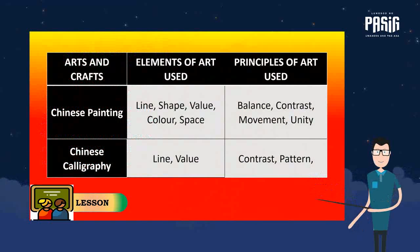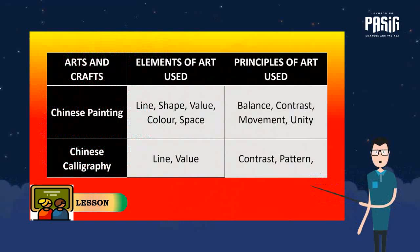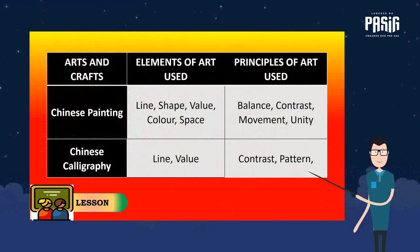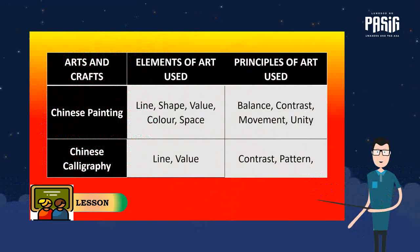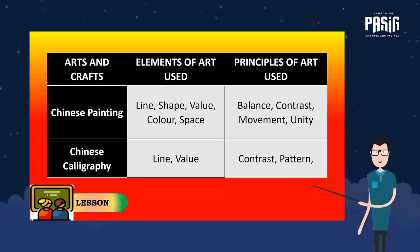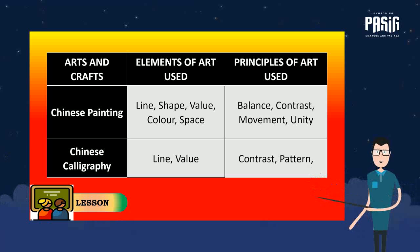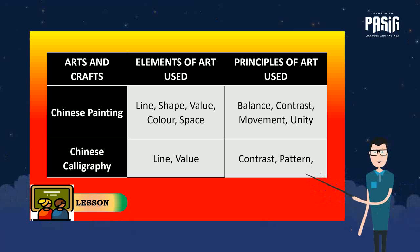The following are the elements and principles of art used in the artworks of China. In Chinese painting: line, shape, value, color, space, balance, contrast, movement, and unity. In Chinese calligraphy: line, value, contrast, and pattern.